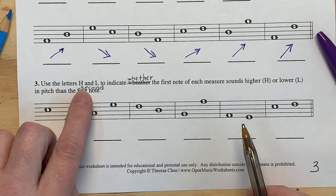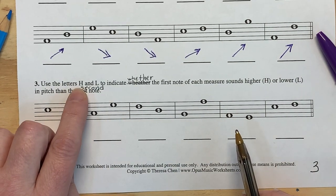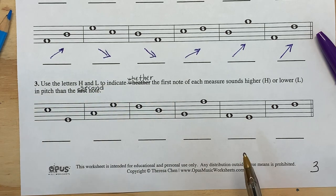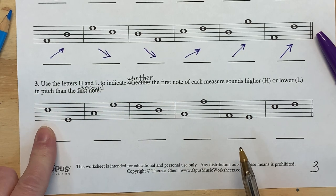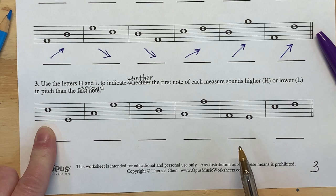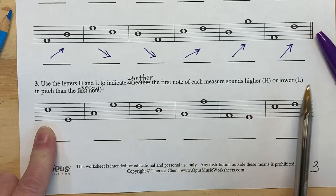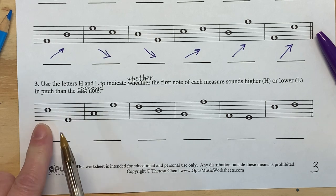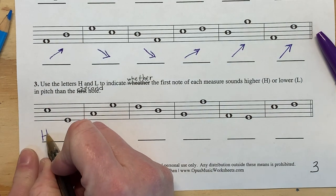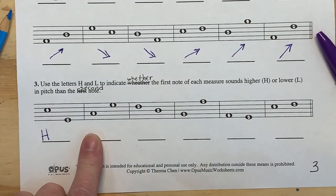We're going to use the letter H and L, higher and lower, to indicate whether the first note of each measure sounds higher or lower than the second note. So is the first note higher or lower? So you can see this one is higher. Is this higher or lower? This is lower.